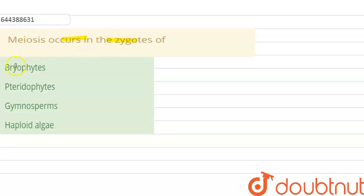occurs in the zygote of bryophytes, pteridophytes, gymnosperms, or haploid algae? So meiosis, or we can say zygotic meiosis - it is also called zygotic meiosis. Zygotic meiosis is the characteristic feature of haploid organisms.